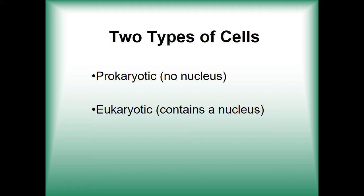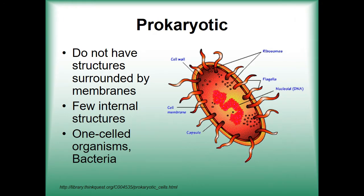Every living organism has a cellular structure that dictates their placement between prokaryotes and eukaryotes. The main difference between these two types of cells is the presence of a nucleus. While eukaryotic cells have a nucleus, prokaryotic cells lack one. Prokaryotes also have the remarkable characteristic of not having any membrane-bound organelles.